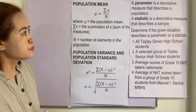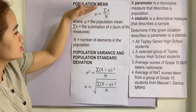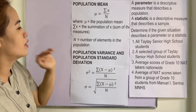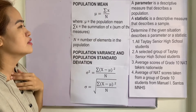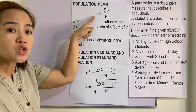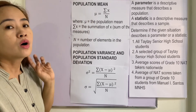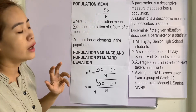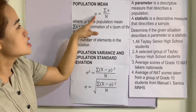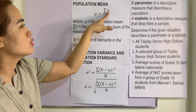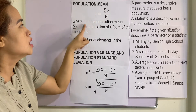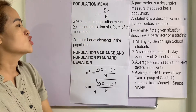Now, for the parameter, we have these three formulas — population mean, variance, and standard deviation. We use Greek letters for population and Roman letters for the sample. The formula for the mean is read as mu: mu equals summation of x divided by n, where n is the entire population. Mu here is the population mean.